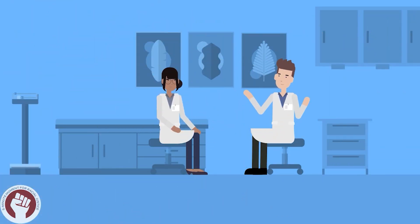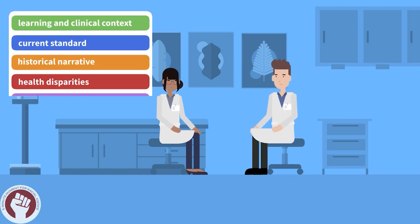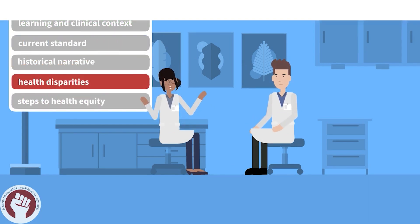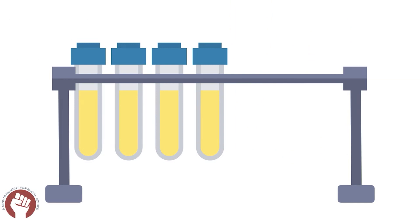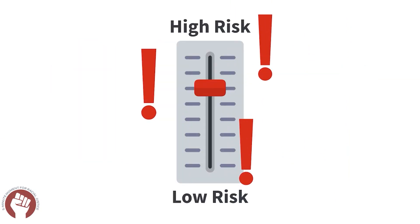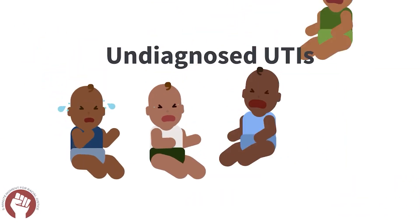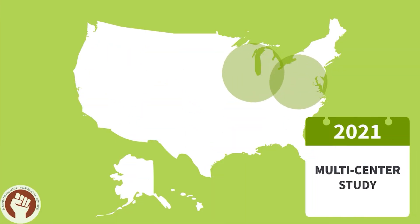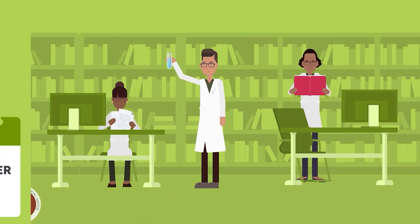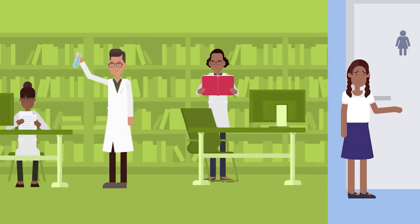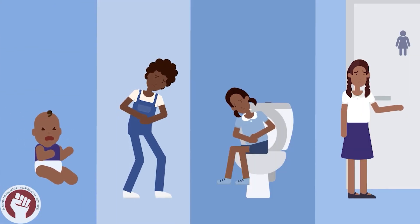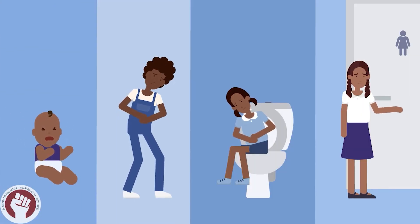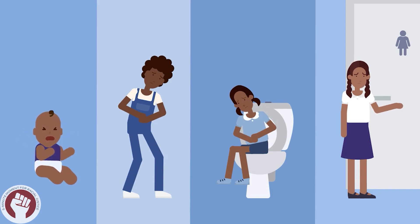How has this led to differences in outcomes for our patients? The downstream effects are that Black children are tested less often for UTIs, need to have more risk factors to qualify for testing, and may be more likely to have undiagnosed UTIs. A 2021 multicenter study showed that Black children had lower rates of urine testing in UTI diagnoses compared to other racial or ethnic groups.